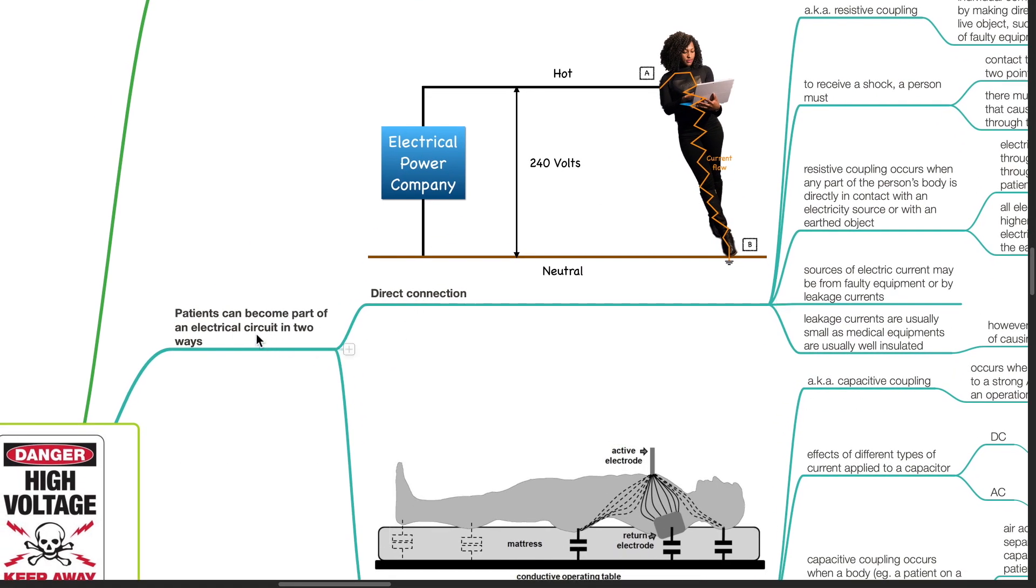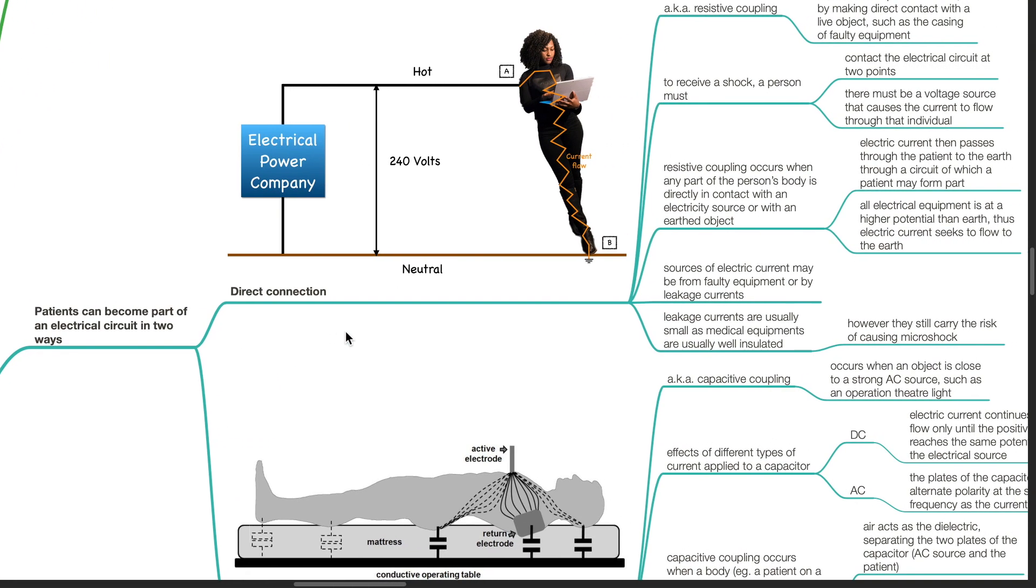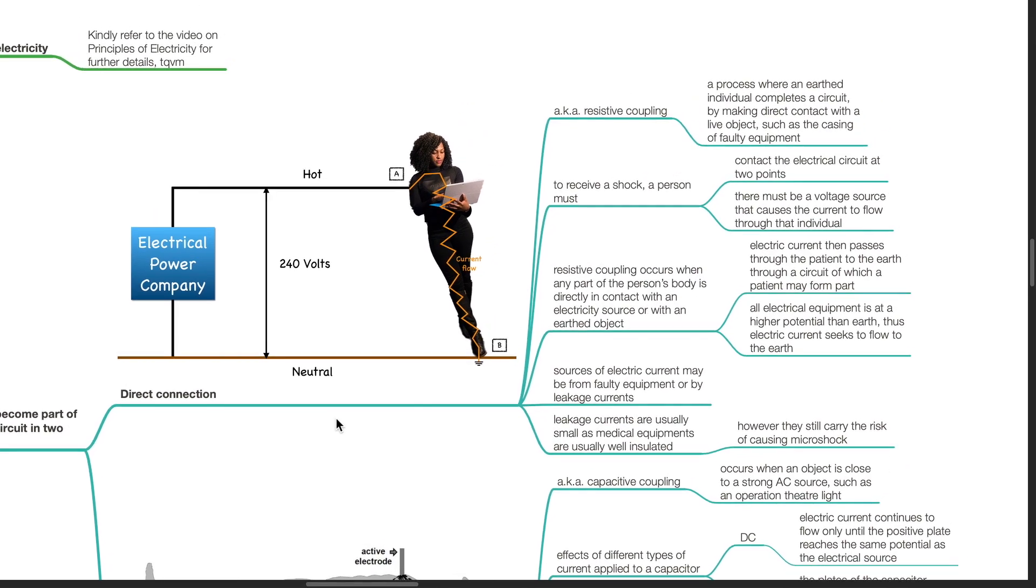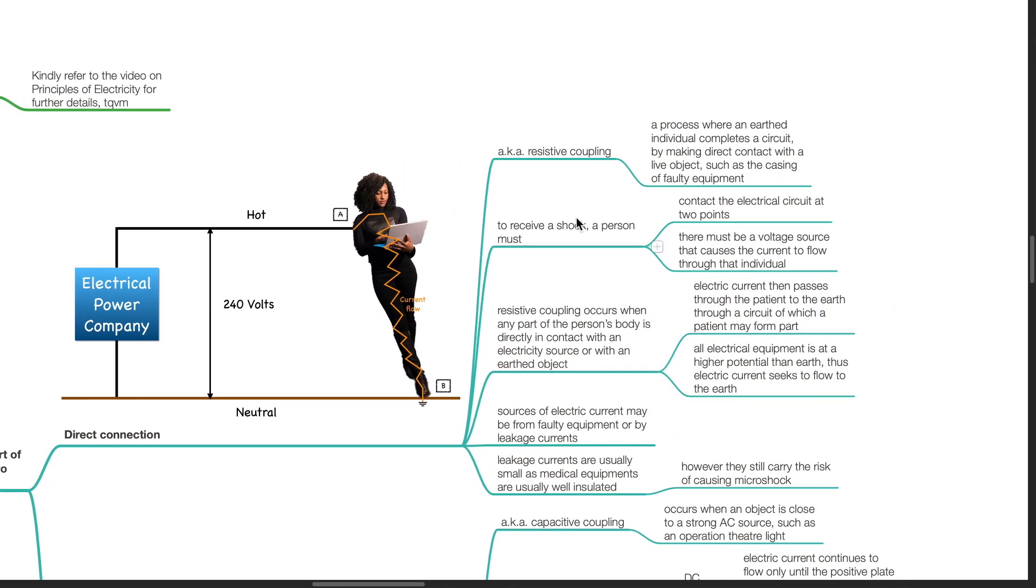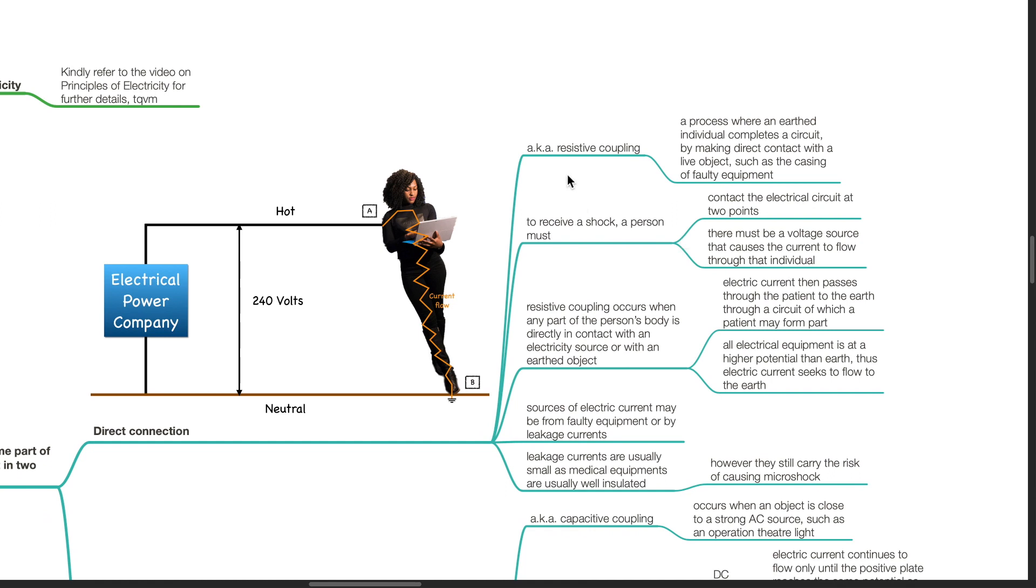The patient can be part of an electrical circuit in two ways, via direct or indirect connection. For direct connection, also known as resistive coupling, this is a process where an earthed individual completes a circuit by making direct contact with a live object, such as the casing of faulty equipment.